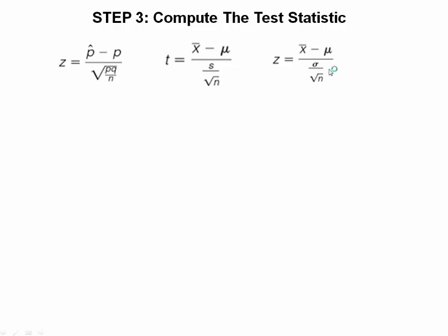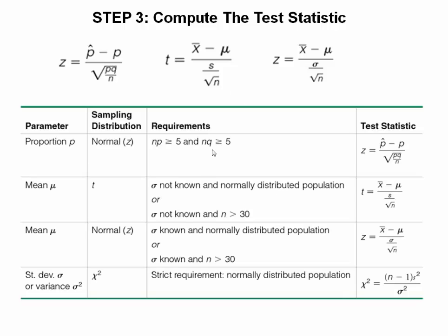When dealing with a known standard deviation, we're going to use this formula, where z is equal to x-bar, which is our sample mean, minus our population mean, over our given sample standard deviation divided by the square root of n. When we have a small sample or sigma is unknown, we're going to use the t-distribution, where we look at x-bar minus mu, which is our population or hypothesized mean, divided by s, the sample standard deviation, over the square root of n.